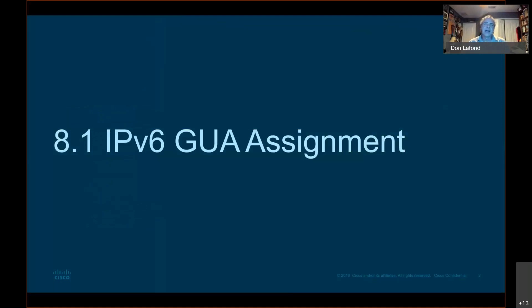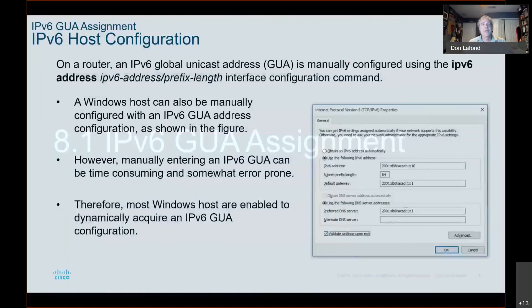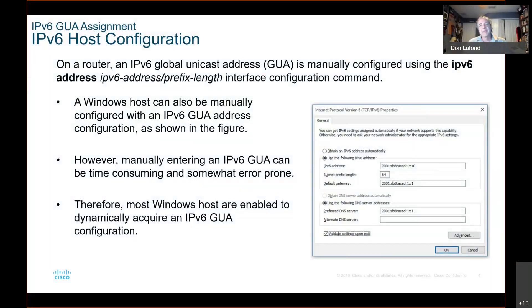So IPv6 GUA assignment. If we're on a PC, we just go to the GUI, and you can configure an IPv6 statically by just typing the IP address in under the configure IPv6 address option. You type in the IPv6 address and the prefix length, and you are home free.